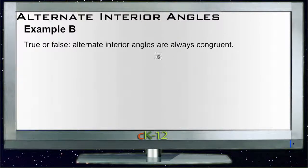Example B says, true or false, alternate interior angles are always congruent. Now this one, knee-jerk reaction says, well, yeah, of course that's true. That's the definition of alternate interior angles.